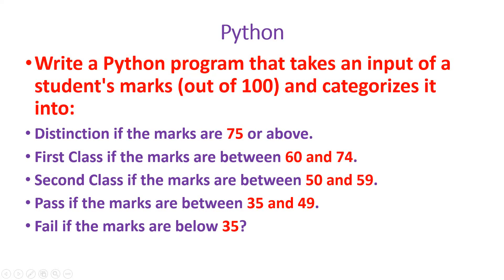For example, if marks are 75 and above, that is under the distinction category. If it is between 60 to 74, first class. 50 to 59, second class. Pass if the marks are between 35 and 49. Fail if the marks are below 35.